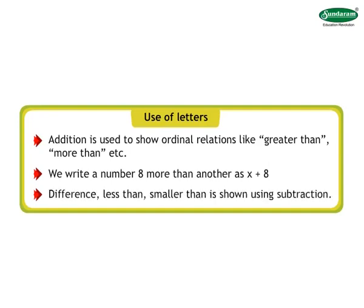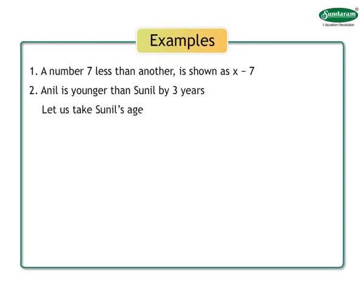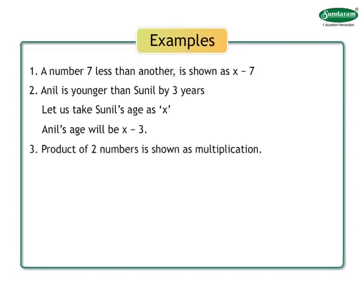Difference, less than, smaller than is shown using subtraction. Example number 1: a number 7 less than another is shown as x minus 7. Number 2: Anil is younger than Sunil by 3 years. Let us take Sunil's age as x. Anil's age will be x minus 3.